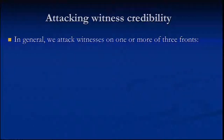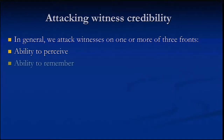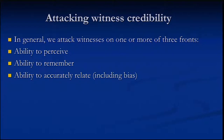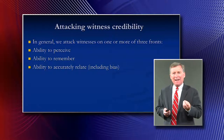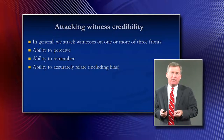How do we attack witness credibility? In general, we attack witnesses on one or more of three fronts. First, their ability to perceive — the sun was in your eyes, there was a tree blocking your view, you couldn't hear from where you were, you were far away, you're colorblind. Second, the ability to remember — this was six months ago, three years ago, you have short-term memory loss. Third, the ability to accurately relate information — that usually means the witness's bias. Sometimes the witness saw things correctly and remembers it exactly, but when communicating it to the fact finder on the stand, their bias gets in the way and they shade their testimony.